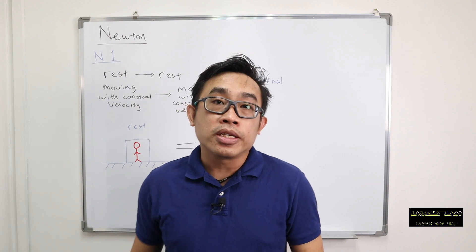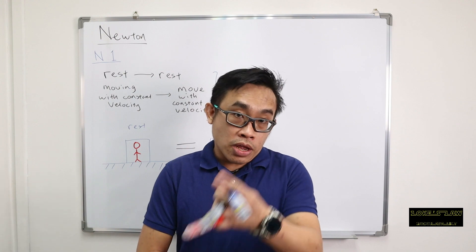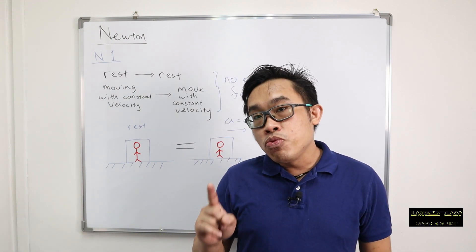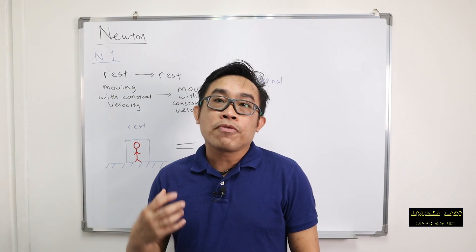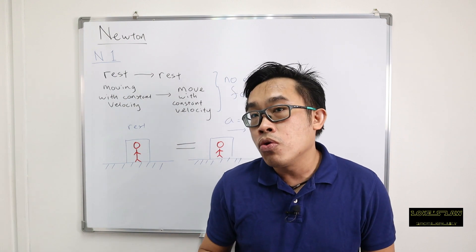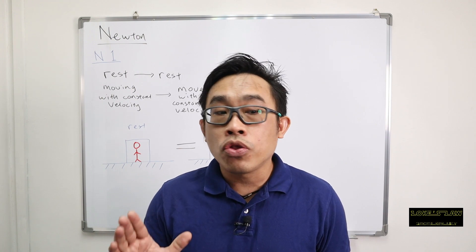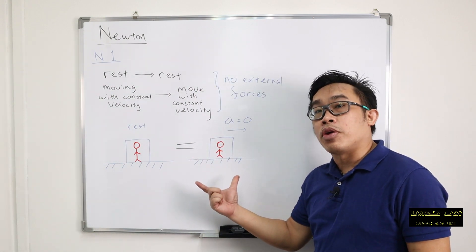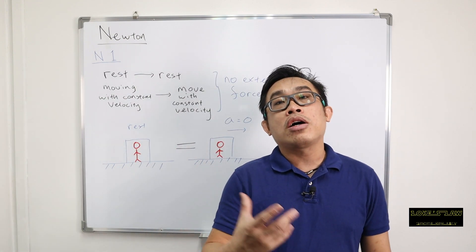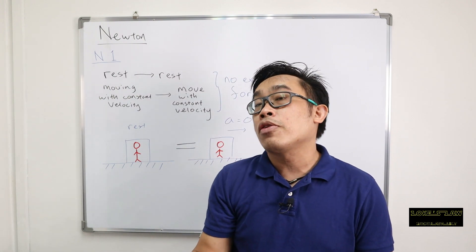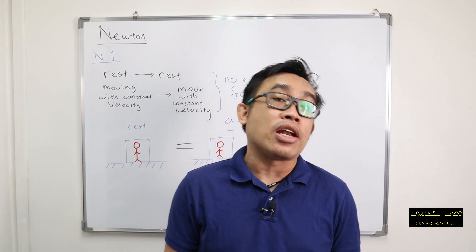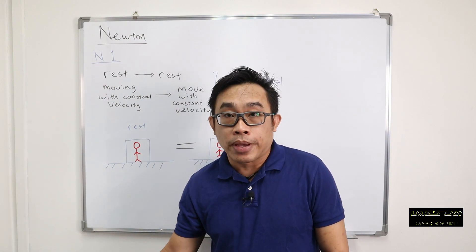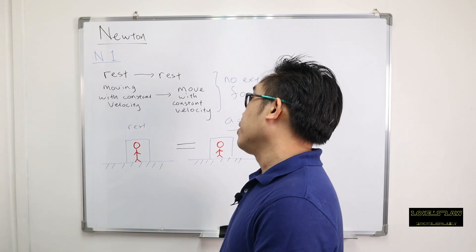A super good example: everyone knows the Earth is rotating, but can you feel it? No. Since the day you were born, if no one told you the Earth is rotating and orbiting, you would never know. You can't feel it because the Earth maintains the same speed constantly. The Earth rotates on itself every 24 hours and completes one orbit every 365 and a quarter days — constantly happening at the same speed. That's why we can't feel it at all.